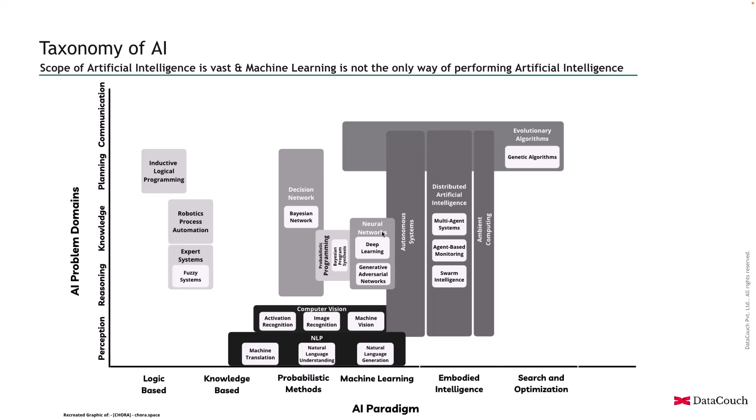Deep neural networks and GANs can generate images of people who don't even exist, or creative drawings that we want. Computers are very creative nowadays — they are generating content, they can generate poems, so there are a lot of possibilities here.